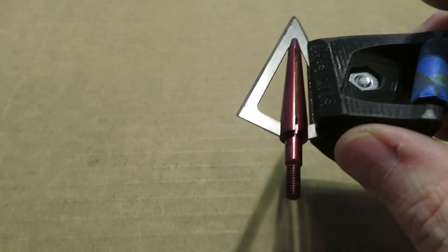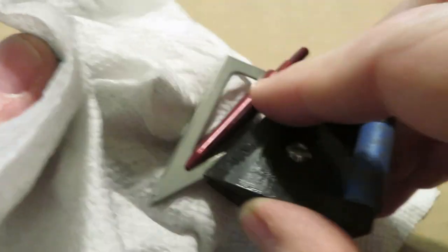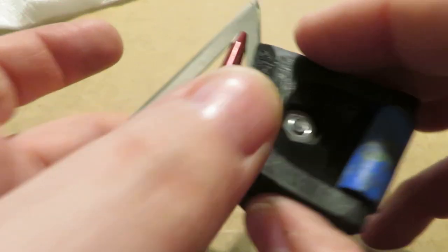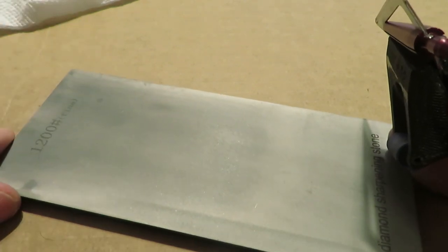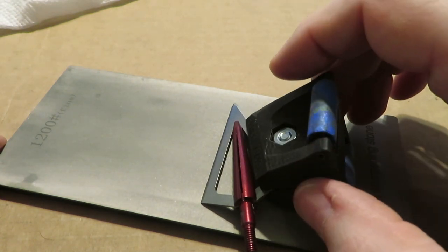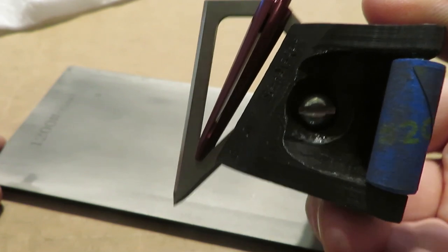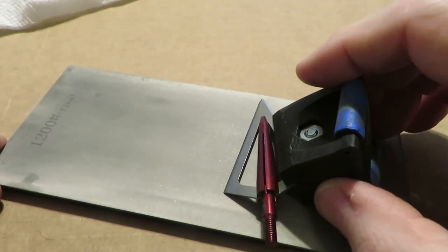Right now we've got an 800 grit edge on there which is reasonably sharp, but we can go further and do better. Before we switch to 1200, we want to clean off all of the 800 grit debris. We do not want to contaminate the 1200 grit plate with anything from 800 grit. Now we will take our 1200 grit plate and repeat the process. I will do that and I will be back.